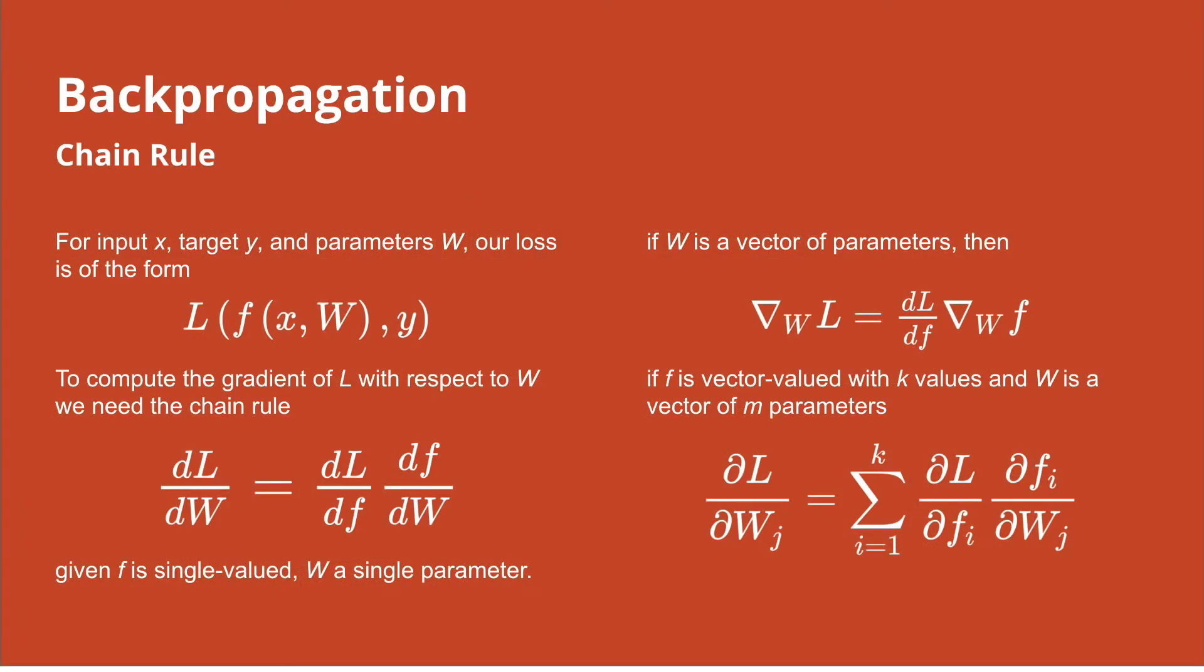So the way that this optimization of loss functions works in the case for neural networks is that we make use of something called backpropagation in order to calculate the gradient or the derivative of the loss function for the full network, so that we then can make updates to the weights of the network and how we make our predictions.